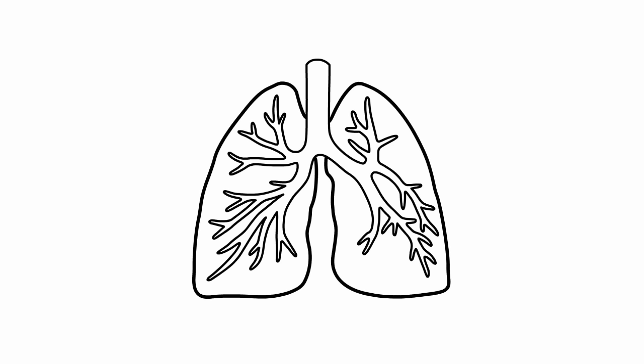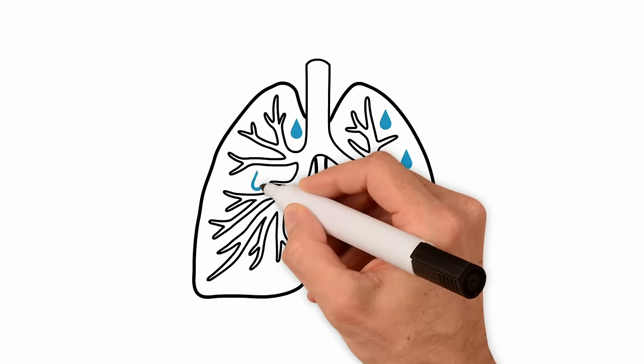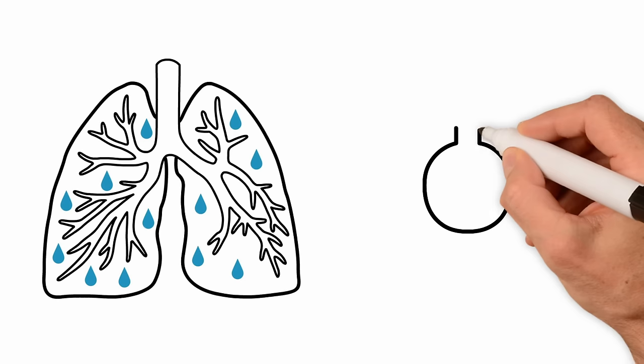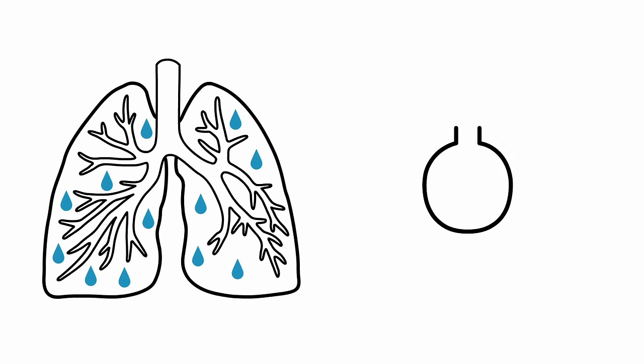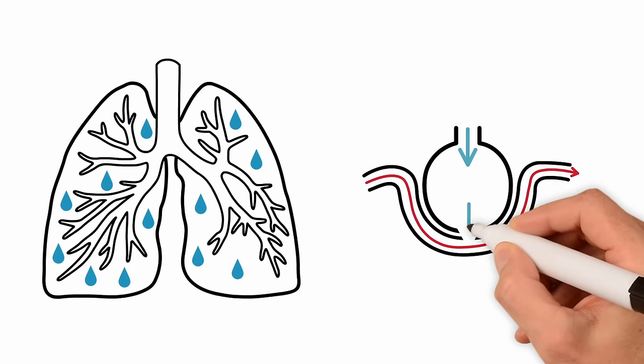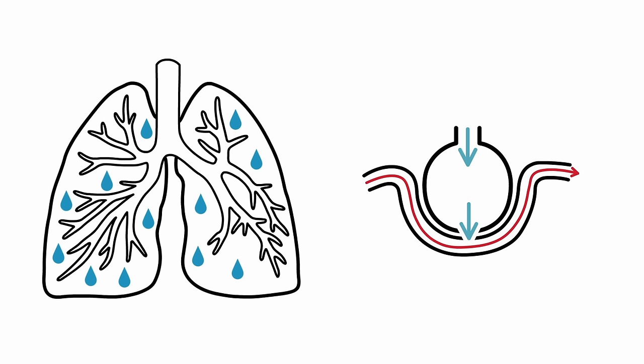ARDS is caused by leaking of fluids into the tiny alveolar sacs of the lungs. For example, here is one magnified alveolus. Normally, oxygen that is inhaled into the alveolus is supposed to diffuse into the blood so that the blood can deliver the oxygen to the body.